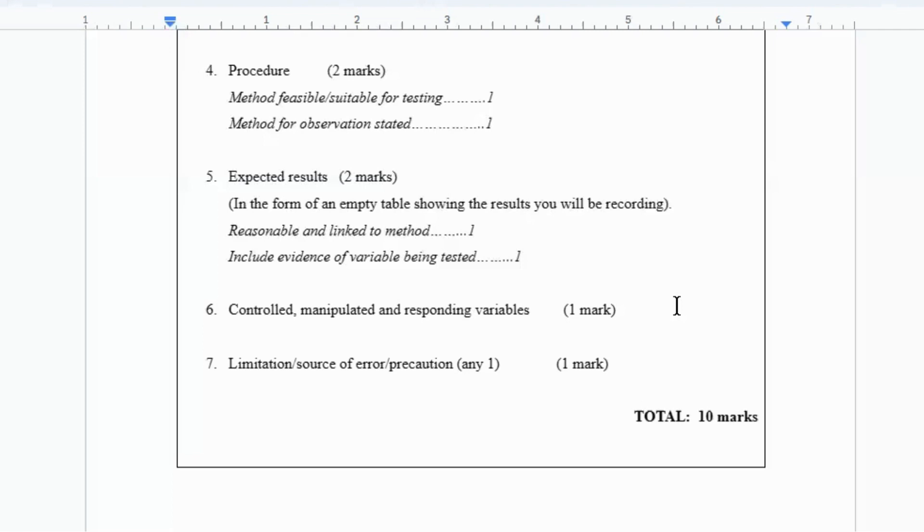And then you have a mark for having either a limitation, a source of error, or a precaution. Your limitation is something you really can't control. No matter what you do as the experimenter, this is something out of your... You can't control if suddenly the rain just starts to fall and your seedlings were outside. You can't control the climate, the weather.